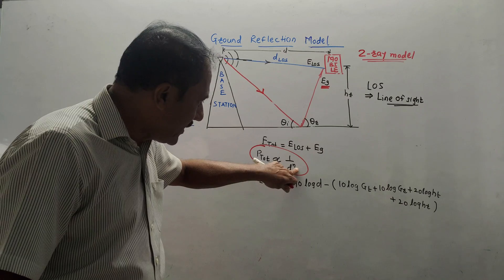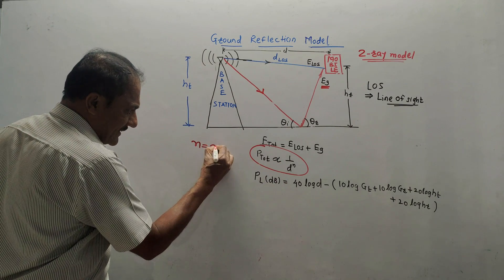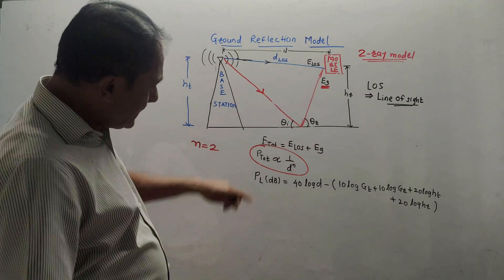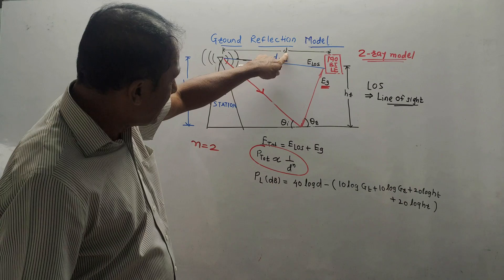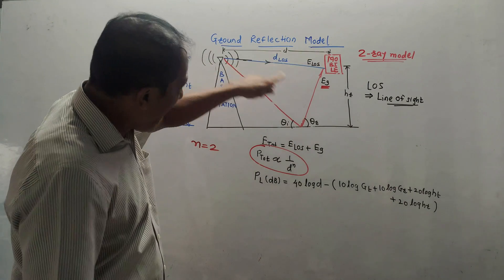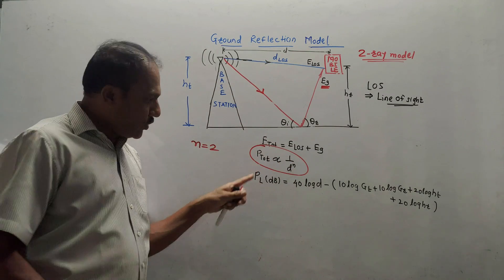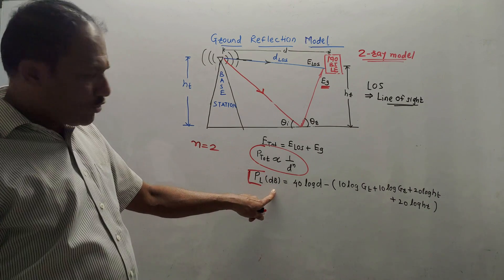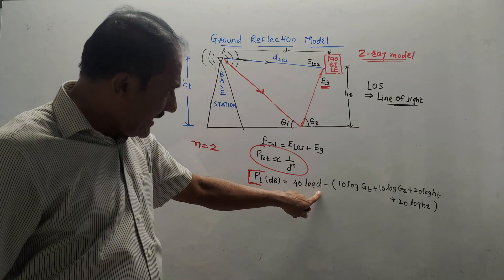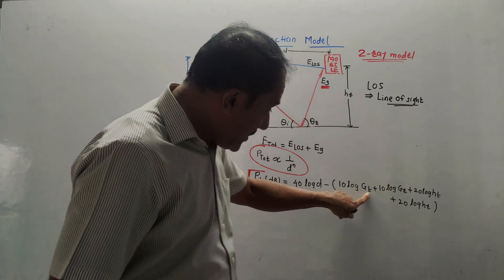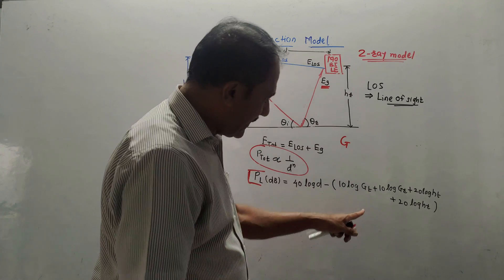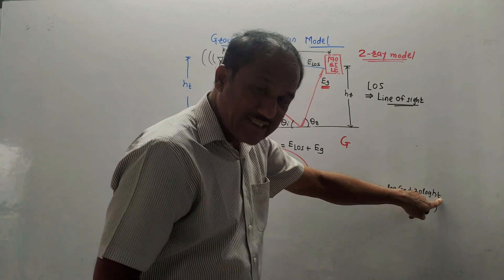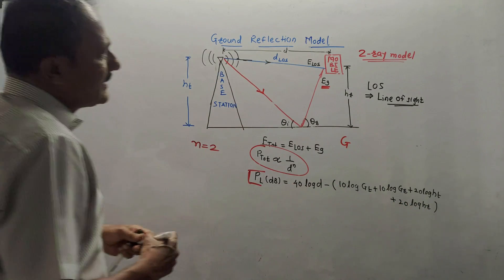Total received power is inversely proportional to D raised to N. If you are using the two-ray model, N equals 2. As distance increases, the received power goes on reducing. The important formula for power loss PL in dB is: 40 log D minus 10 log GT plus 10 log GR plus 20 log HT plus 20 log HR. GT is gain of transmitting antenna, GR is gain of receiving antenna, HT is height of transmitting antenna, HR is height of receiving antenna.